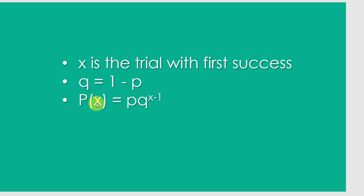Probability of x, where x is a trial of the first success, is equal to p times q to the x minus 1.